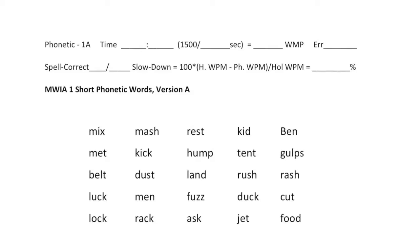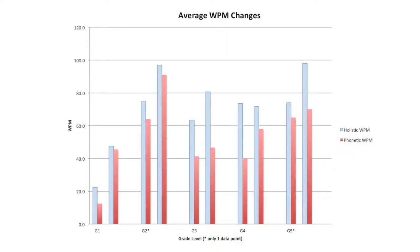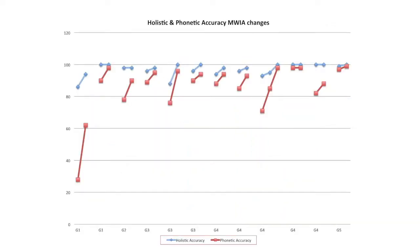To finish up, we'll take a quick look at a few graphs showing improvement on these tests. More are available in a document and a YouTube movie called Understanding and Using the MWIA. This chart shows the average improvement in reading speed on the MWIA before and after a group Syllable Spell Success class. And this chart shows before and after accuracy scores on the MWIA. The red are phonetic words and the blue are holistic.